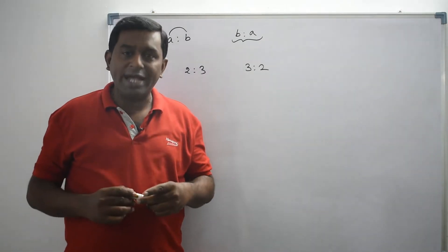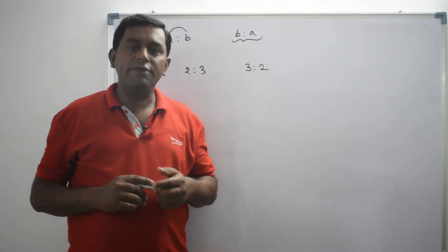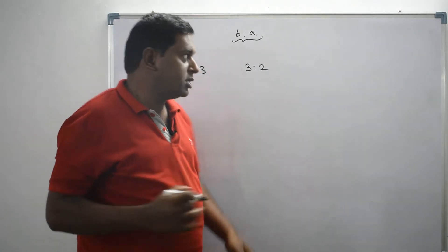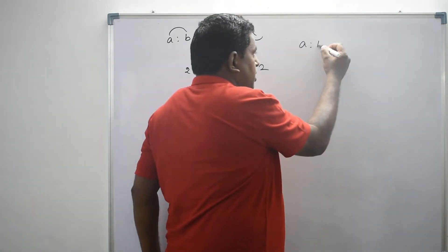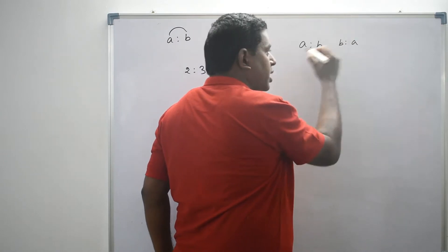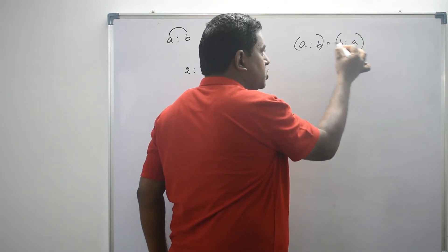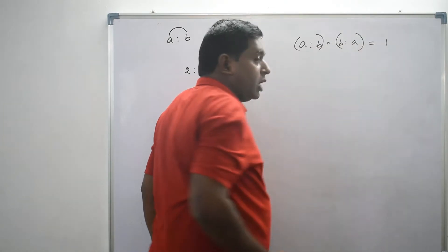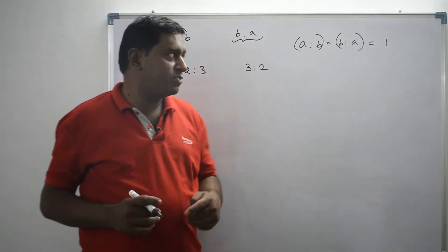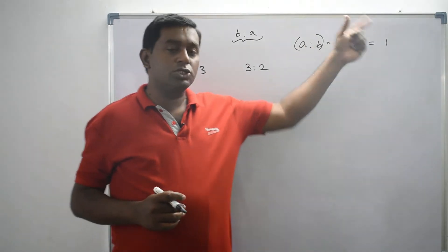One more important fact we have to understand about inverse ratio: if two ratios are inverse to each other, the product of those two ratios will be equal to 1. We already know that the ratio A is to B and the ratio B is to A are inverse to each other. If you multiply these two ratios, their product will be equal to 1. This is a fact we always have to remember about inverse ratios.